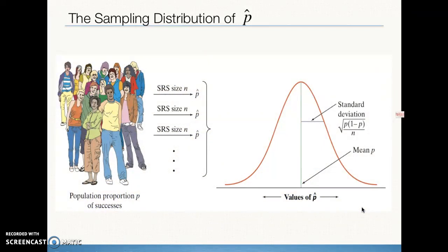For the sampling distribution of p-hat: start with population proportion p, take many samples of size n, calculate a p-hat for each sample, and graph all the values. The center is mu sub p-hat equals p, the population proportion, and the standard deviation is the square root of p times (1 minus p) over n.